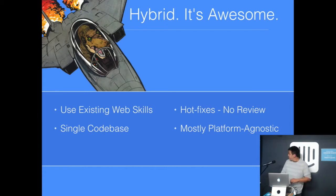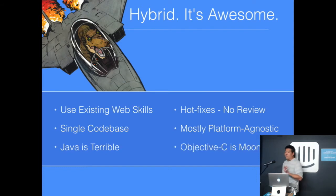Ionic is mostly platform agnostic — I say mostly just because we have a lot of web developers in the room who probably know all too well the differences that CSS can have cross-platform. And of course, Java is terrible, and clearly Objective-C was written on the moon.